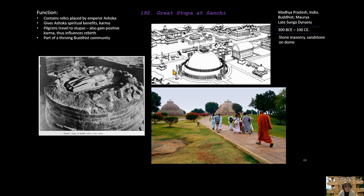The fourth function is that the Great Stupa sits within a thriving Buddhist community around it — there are many other stupas nearby, all kind of like burial mounds. So it's a part of that community of learners and worshipers.